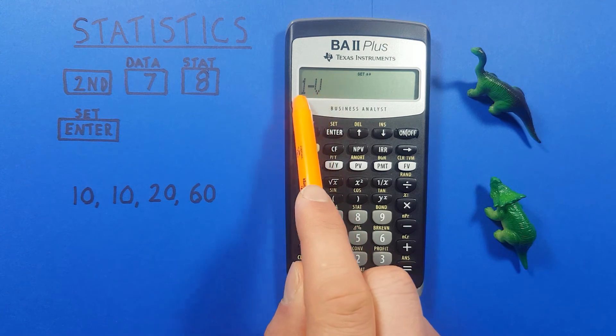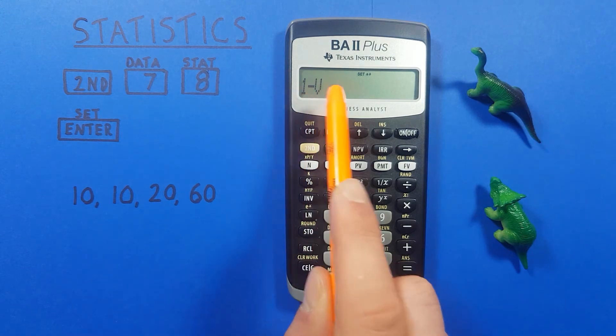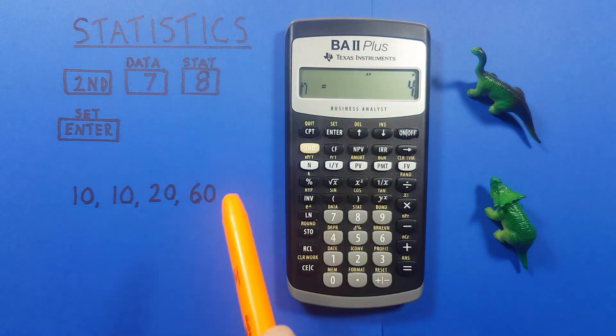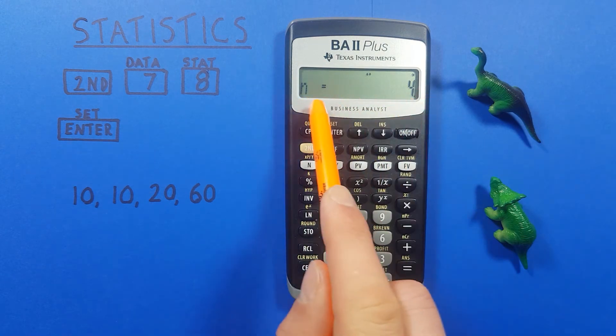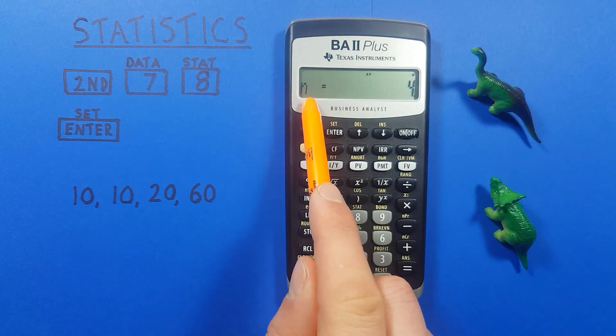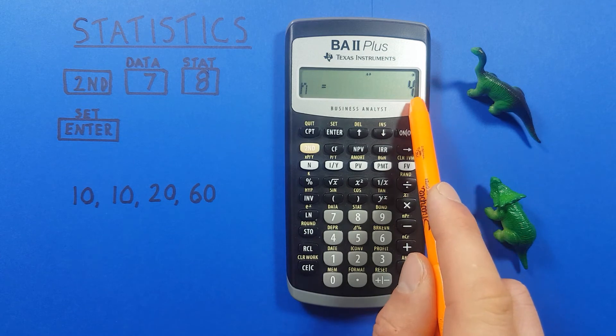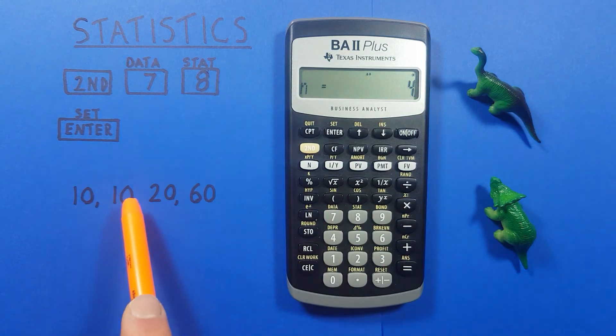There's our 1v so we were in one variable stats and then if we press down the first thing we get is n equals 4. This is saying the number of variables that we have in our data set is equal to 4 which 1, 2, 3, 4 as we can see is correct.